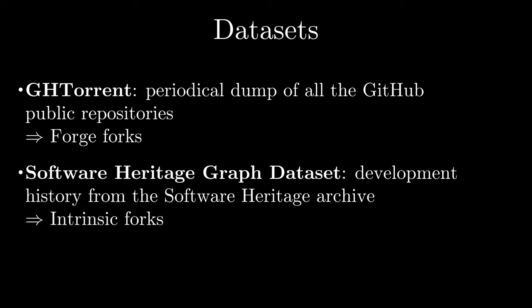The GHTorrent dataset is a periodical dump of all the GitHub public repositories and contains the forking relationships as they are declared on GitHub. This will be our baseline for the forge-level metadata. The Software Heritage graph dataset contains a unified and deduplicated representation of the development history in the Software Heritage Archive — you can think of it like a giant Git repository merging together all the publicly available repositories from different sources. We exploit these deduplicated representations to find the shared objects in the development history. As our experimental basis, we take the union of repositories found in both datasets.